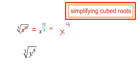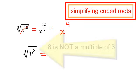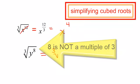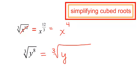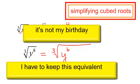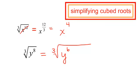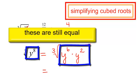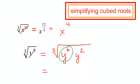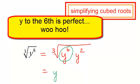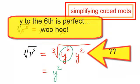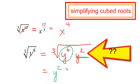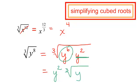The cube root of y to the 8th. 8 is not a multiple of 3, so I'm going to break it down just like I did with square roots. I want the largest multiple of 3 that fits — y to the 6th works. So I'll change y to the 8th to y to the 6th times y to the 2nd. y to the 6th is a perfect cube; it comes out from underneath the radical — 6 divided by 3 is 2, so it becomes y squared. The y to the 2nd stays inside: the result is y squared times the cube root of y squared.